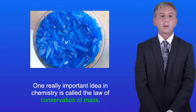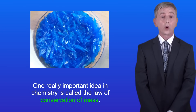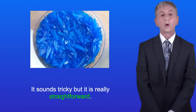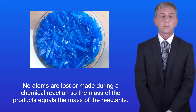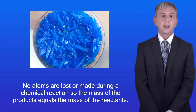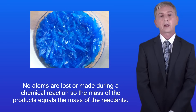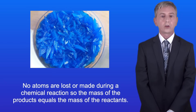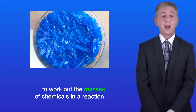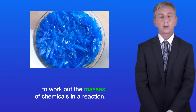One really important idea in chemistry is called the law of conservation of mass. It sounds tricky but it's really straightforward. No atoms are lost or made during a chemical reaction. So the mass of the products equals the mass of the reactants. In this video we're going to use this law to work out the masses of chemicals in a reaction.